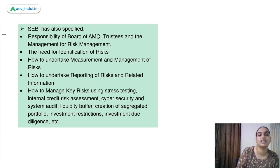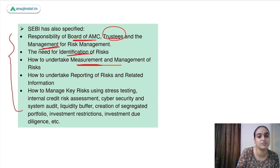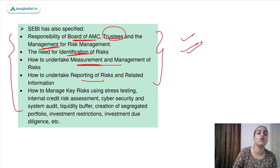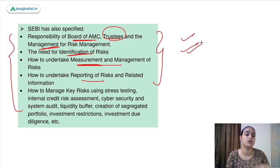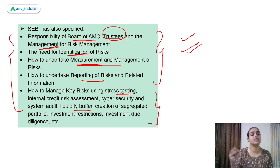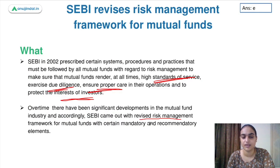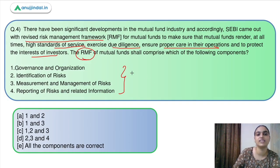SEBI has also specified the responsibilities of the board of AMC, trustees, and management — for identification of risk, measurement and management of risk, and reporting of risk. Risks can be managed using tools like stress testing, cybersecurity measures, and liquidity buffers. All these should be properly mentioned in the framework and reported to SEBI. Coming back to our question — we had to identify which components are part of the RMF. We discussed that all four are there. Answer is option E.